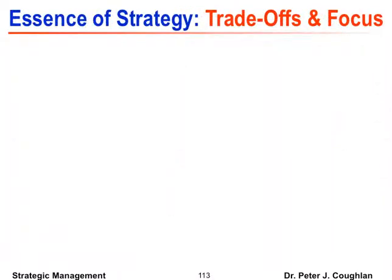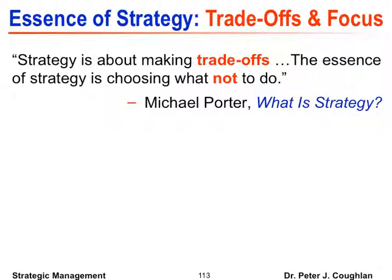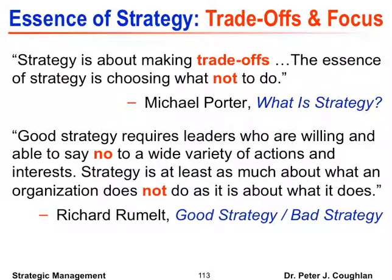Michael Porter, in 'What is Strategy?', says: strategy is about making tradeoffs — the essence of strategy is choosing what not to do. I highlighted that in the article and annotated it as the most important lesson in the entire article — actually, the most important lesson in the entire course. Richard Rumelt, author of 'The Perils of Bad Strategy,' says: good strategy requires leaders who are willing and able to say no to a wide variety of actions and interests. Strategy is at least as much about what an organization does not do as it is about what it does.